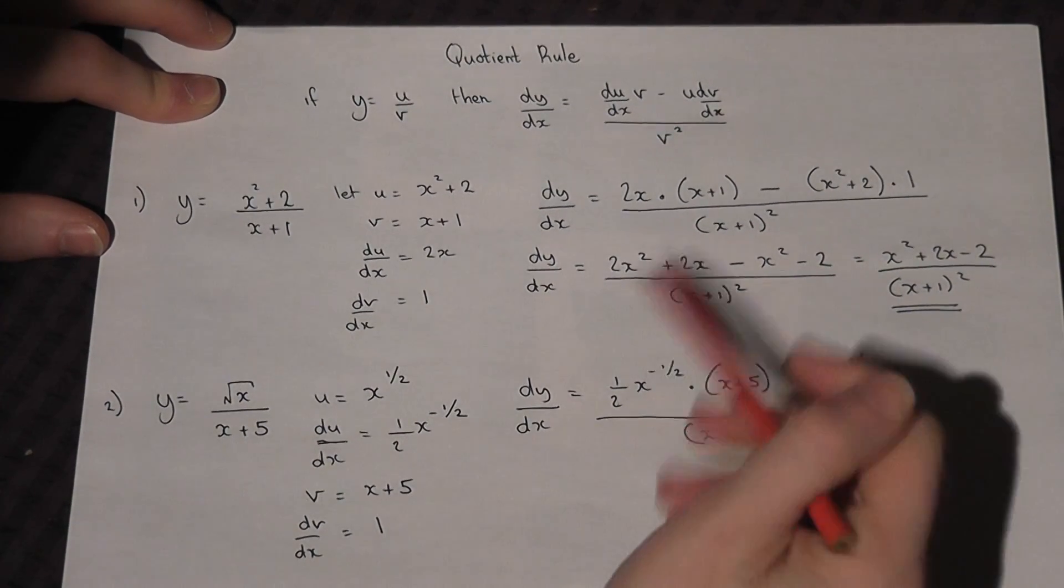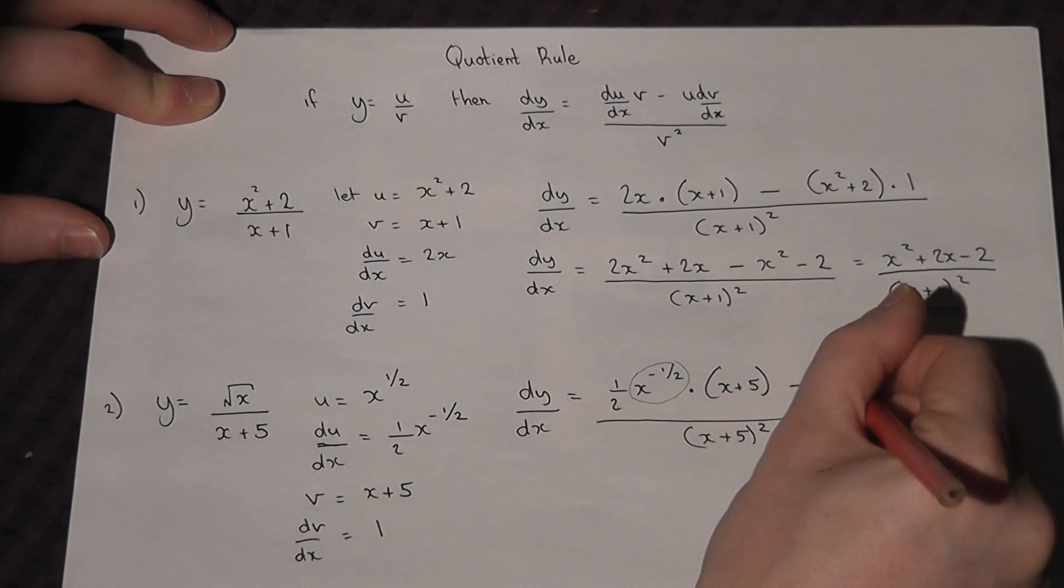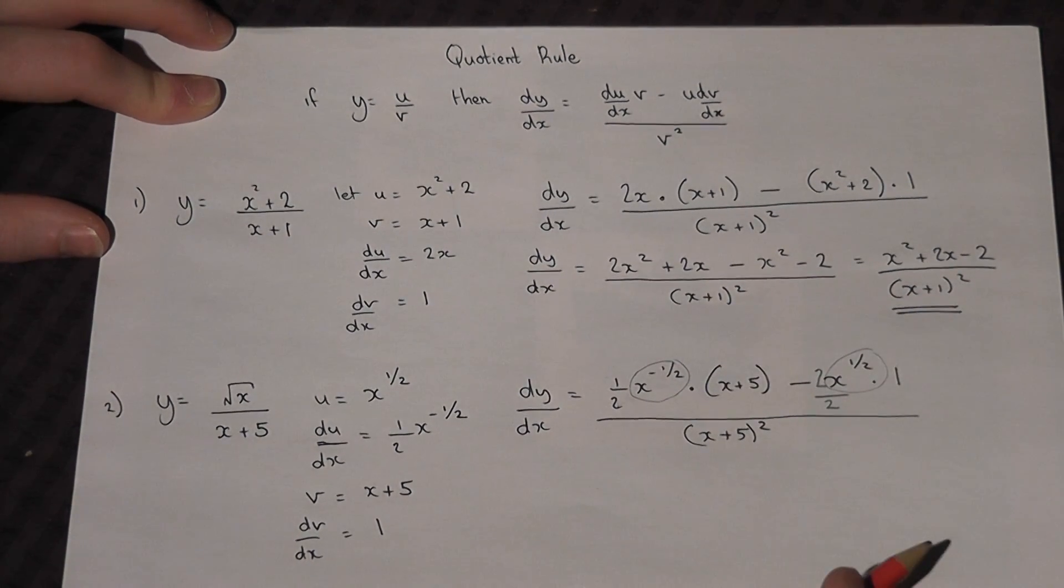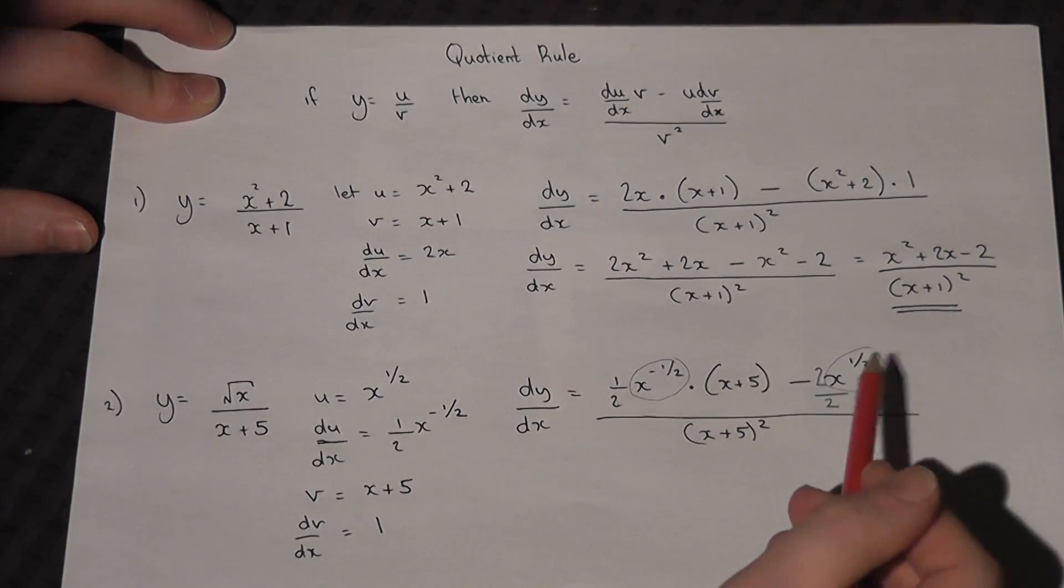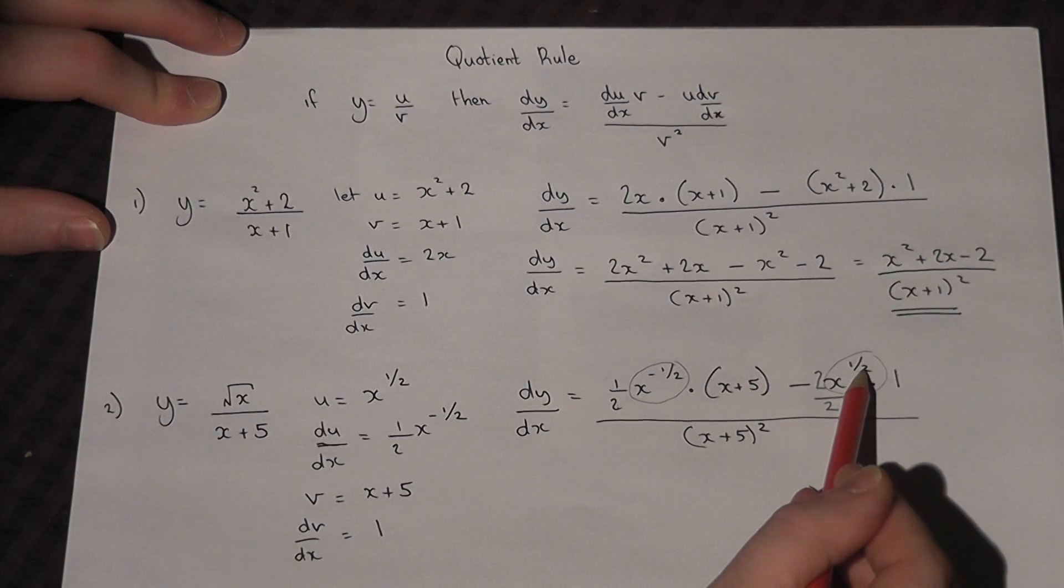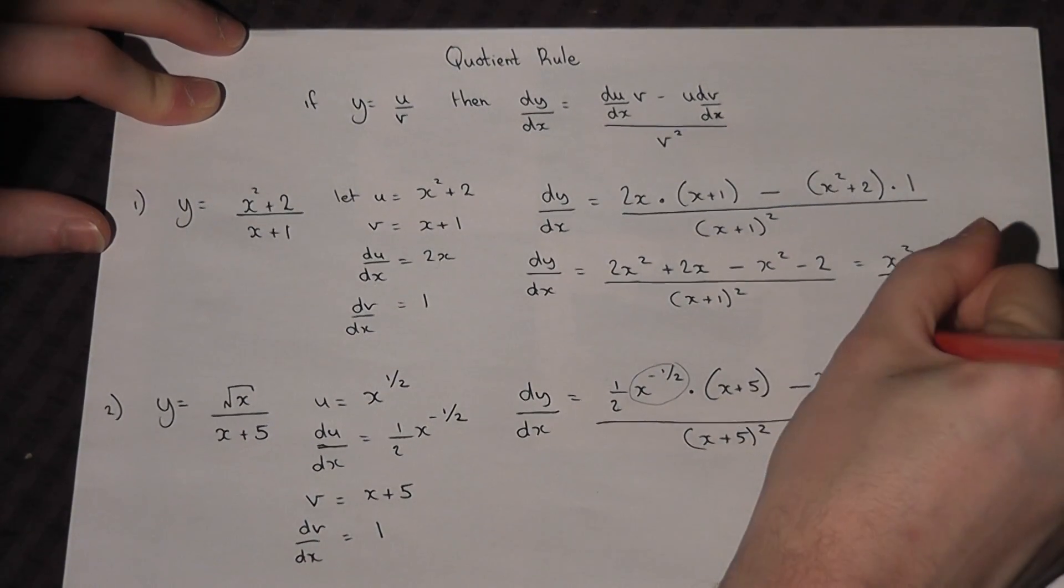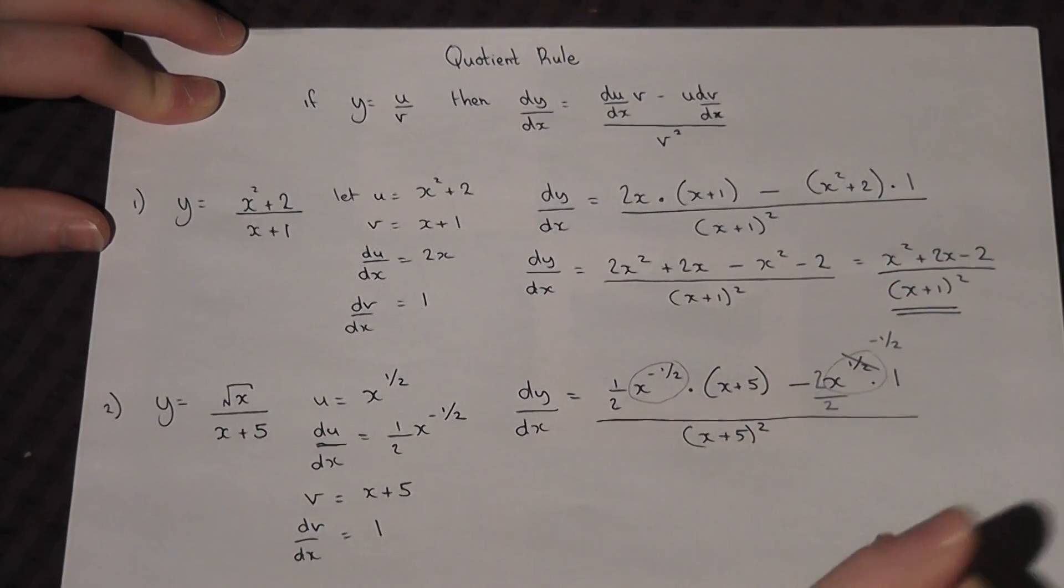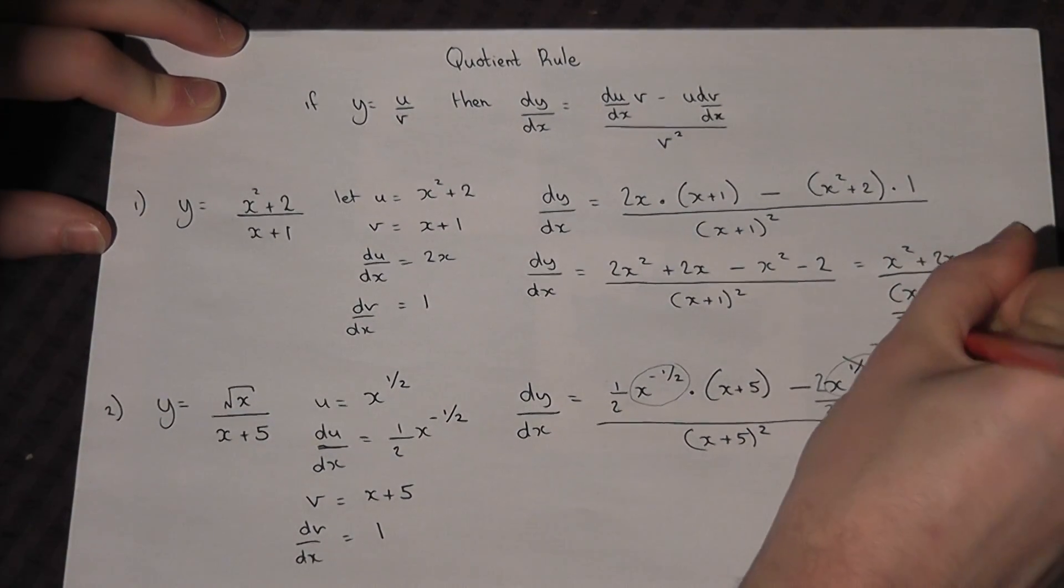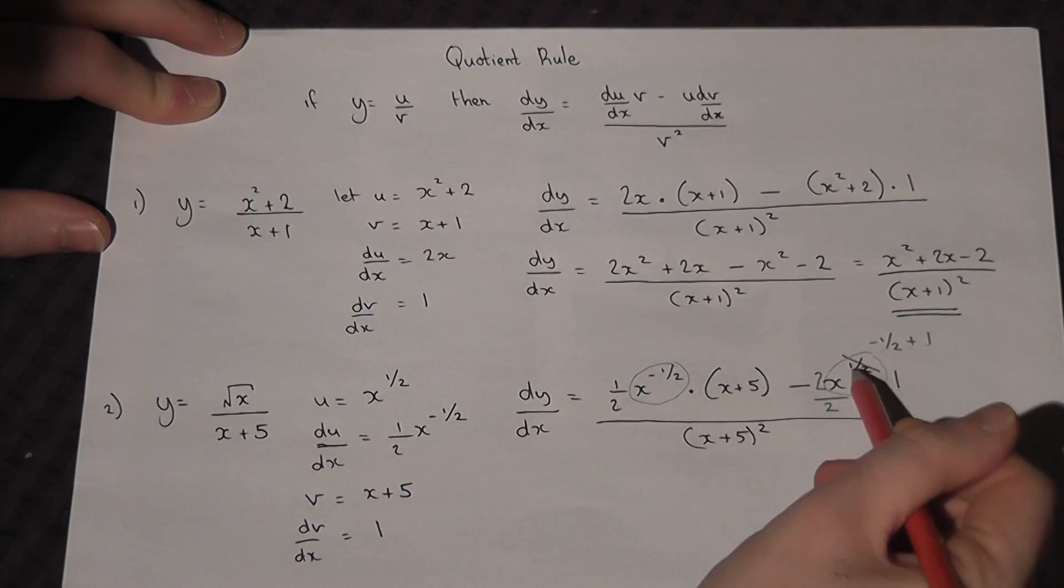And then, look for similar terms. They're similar. And then, write the larger power, in this case, the plus 1 half, as the smaller power, which is negative 1 half. But obviously, it's plus 1. Negative 1 half plus 1 is plus 1 half.